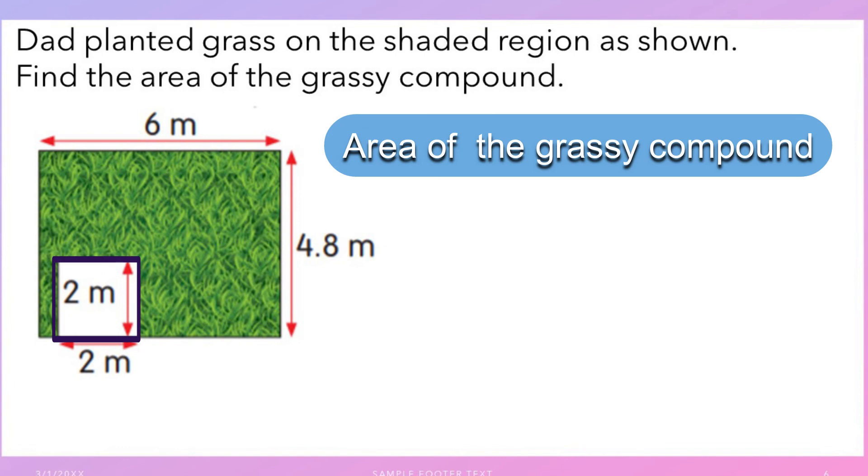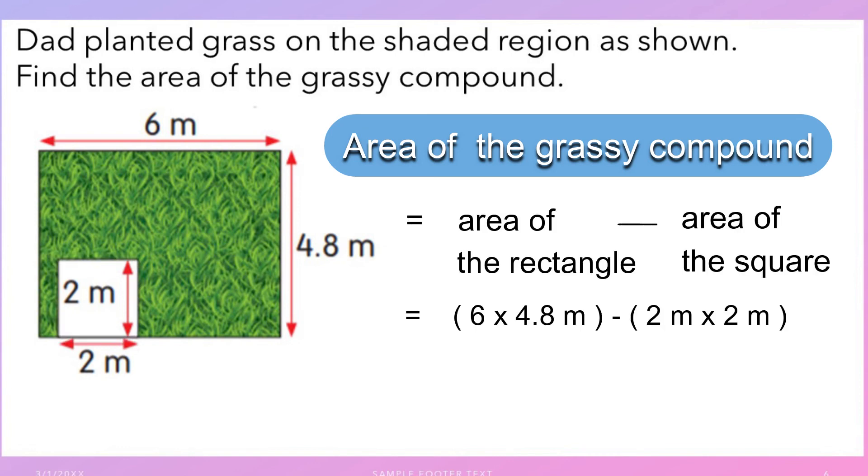The area of the rectangle will be 6 meters multiplied by 4.8 meters, that will be 28.8 square meters. Area of the square will be 2 meters multiplied by 2 meters, equals 4 square meters. So the area of grassy compound will be 28.8 minus 4, that equals 24.8 square meters.